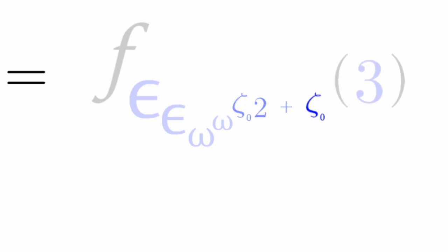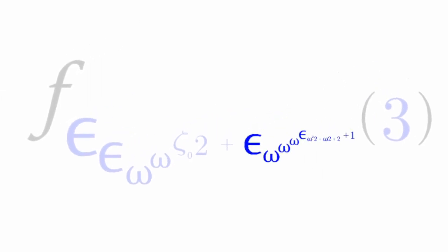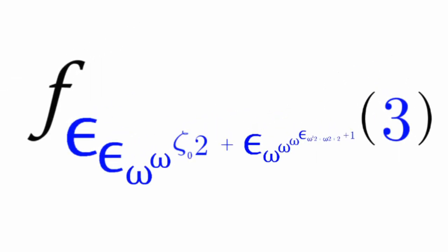And then zeta naught of 3, as we've known earlier, expands to this giant monstrosity. But this is just f(ζ₁)(3).